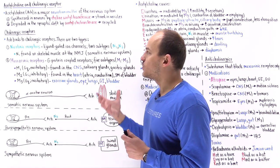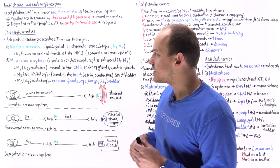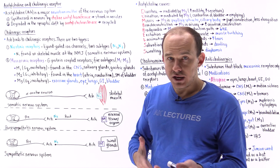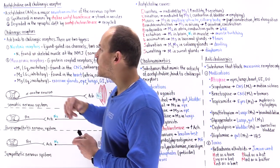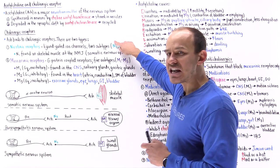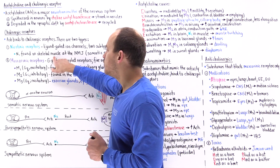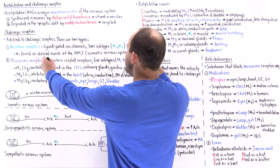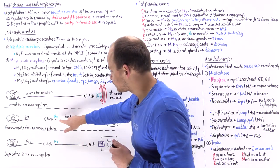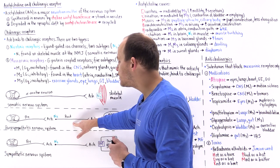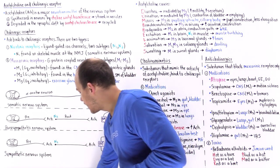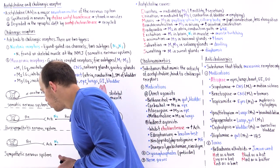Nicotinic receptors are ligand-gated ion channels. When acetylcholine binds onto the nicotinic receptor, it creates an opening in the central portion of that channel, allowing ions — for example, sodium — to flow in. We have two subtypes of nicotinic receptors: N1 and N2. N1 is located on the skeletal muscle at the neuromuscular junction — used by the somatic nervous system. N2 is found on neurons, for example on the cell body of post-ganglionic parasympathetic and sympathetic cells. N1 is the more important one for this lecture.